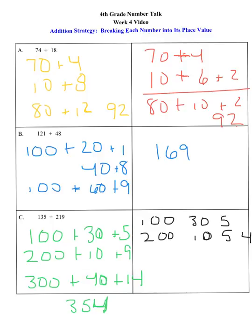So it would be 200, so your 100 plus 200 gives you your 300. 30 plus 10 gives us our 40. 5 plus 5 gives us our 10, and then we still have our 4 left over, which is again our 354.